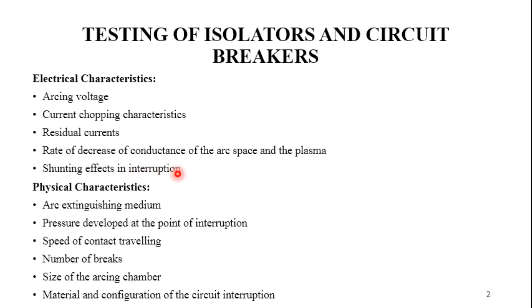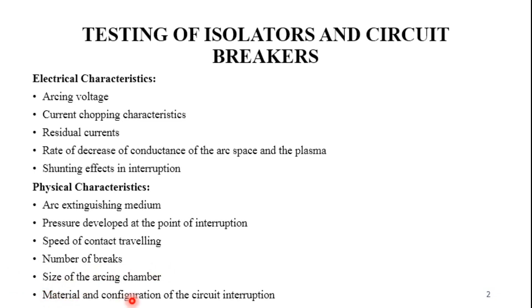Other physical characteristics include the arc extinction medium — such as vacuum, air gap, or SF6. Additionally, the pressure developed at the point of interruption, the speed of contact travel, the number of breakers used, the size of the arcing chamber, the pressure exerted between the two contacts, and the material and configuration of the circuit interruption contacts are all relevant.